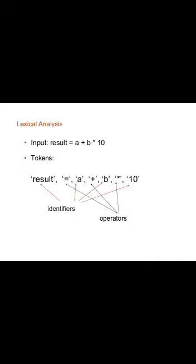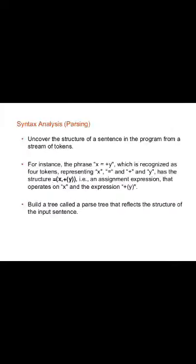Here is an example: the input 'result = a + b * 10'. The tokens for this input string are: result, =, a, +, b, *, and 10. The identifiers are result, a, b, and 10, and the operators are the assignment operator =, plus, and multiplication. So there are seven tokens total — four identifiers and three operators. A token is nothing but the category or class of an input for the given instruction.